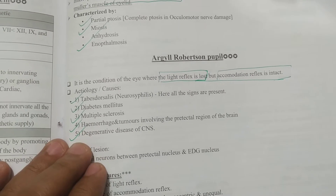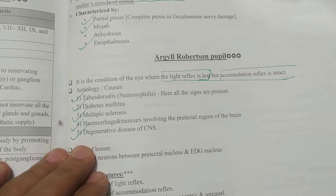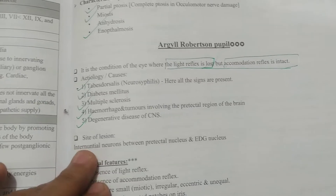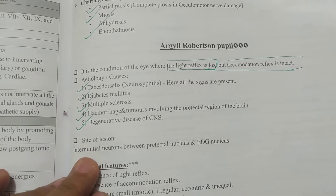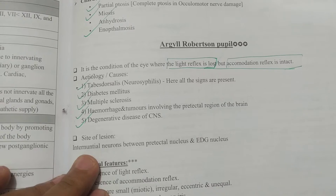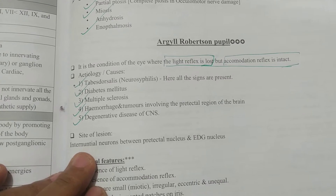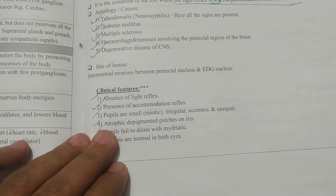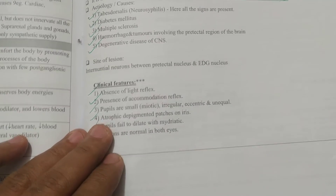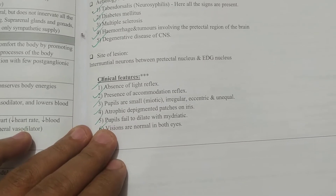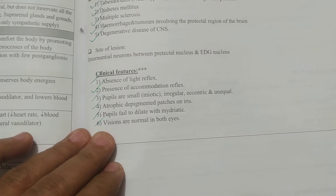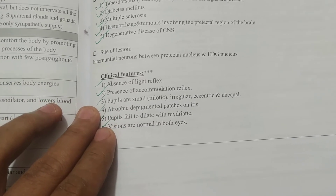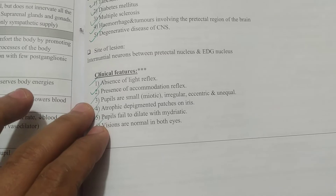Tumors involving the pre-tectal region of the brain and degenerative diseases of the CNS are also causes. The site of the lesion is the interneuronal neurons between the pre-tectal nucleus and the Edinger-Westphal nucleus. Clinical features: light reflex is absent, accommodation reflex is present, and the pupils are small — atypical pupils fail to dilate. Vision is normal in both eyes.